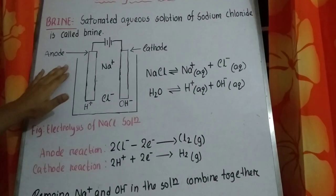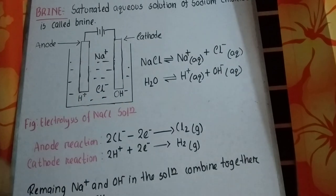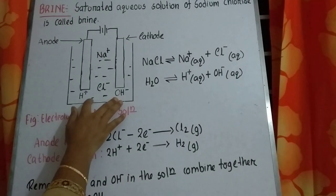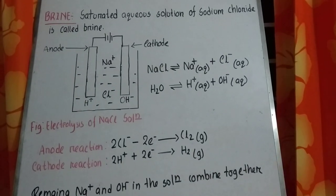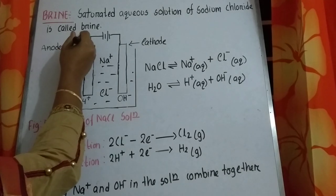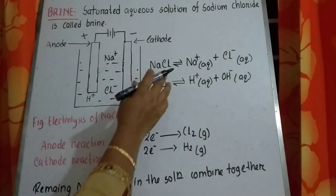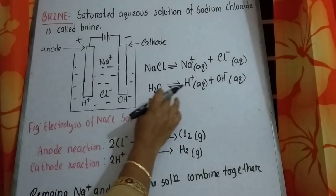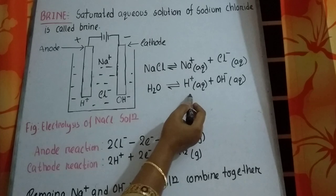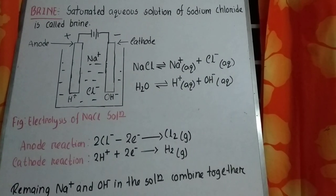For the electrolysis of brine, we take an electrolytic tank. The electrolyte is brine, and as brine is an aqueous solution of sodium chloride, there is water present. Two platinum rods are used as anode and cathode — anode is the positive electrode and cathode is the negative electrode. Sodium chloride ionizes into sodium ion and chloride ion, and water molecules ionize into hydrogen ion and hydroxyl ion. So four ions are present: cations are sodium ion and hydrogen ion; anions are chloride ion and hydroxyl ion.